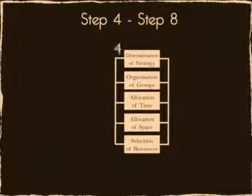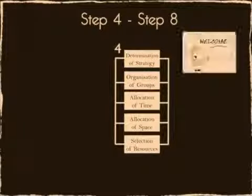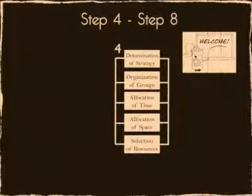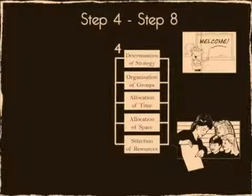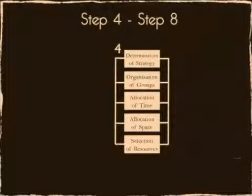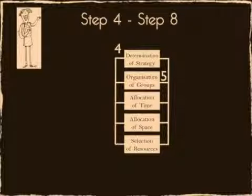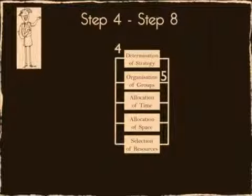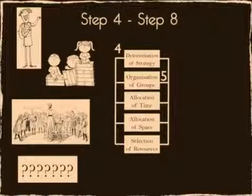The fourth step, determination of strategy, gives the teacher a variety of options. For example, traditional teacher transmission or, on the other hand, a group inquiry approach, where the tutor acts as a facilitator and gives direction. Step 5, named organisation of groups, asks the instructor questions like: Should instruction be individual, self-study, involve small groups, entire class, or an alternative form?